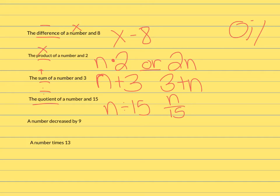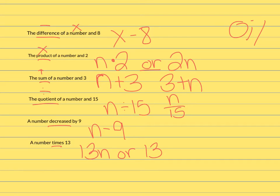Go ahead and try the next two — pause the video right now and then come back and check it. So I hope you've done the next two. We've got one with decrease, so it would be n minus 9 for that one. And then a number times 13 — that's either going to be 13n or 13 dot n.